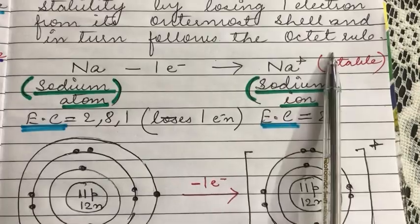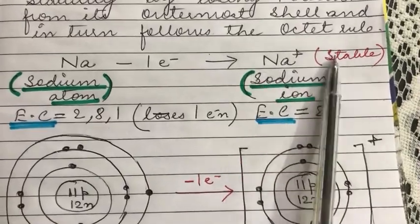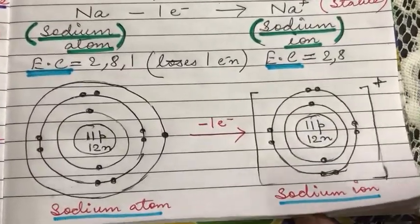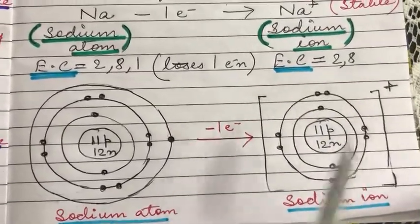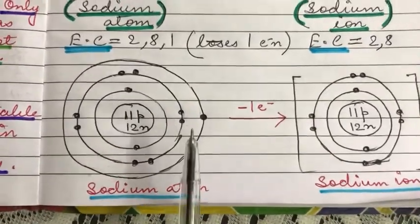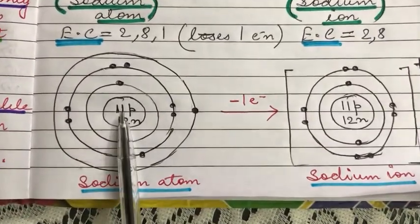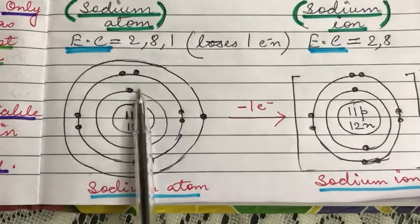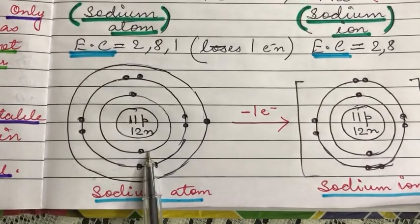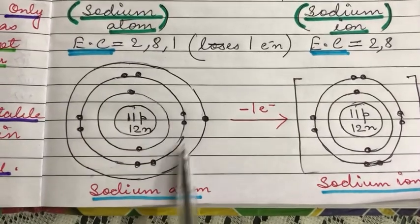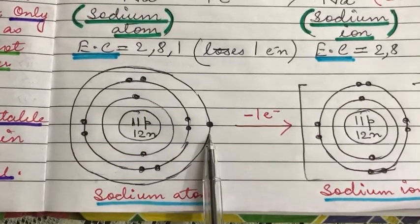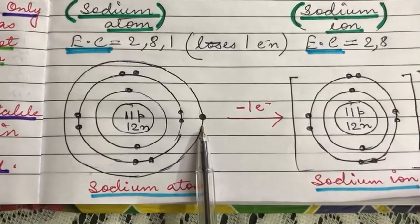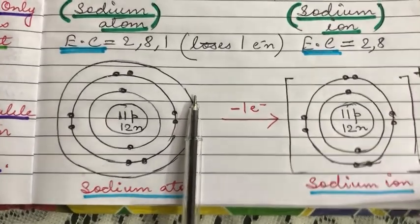Let's understand this with the help of the atomic structure. The sodium atom has 11 protons and 12 neutrons in its nucleus, two electrons in its first shell, eight electrons in the second shell, and one electron in its third and outermost shell.